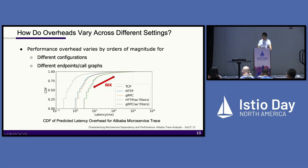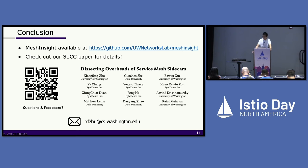These massive variations across different settings is exactly why we need a tool like MeshInsight, so developers and users can learn the overhead of their specific configuration of interest without spending precious time profiling them. MeshInsight is available on GitHub, and we also published a paper about MeshInsight at the Symposium on Cloud Computing last month. Please check out the paper for details. Thanks everyone for listening.